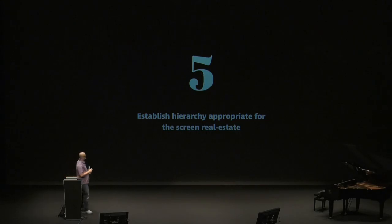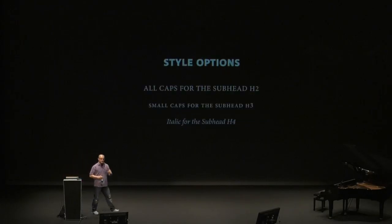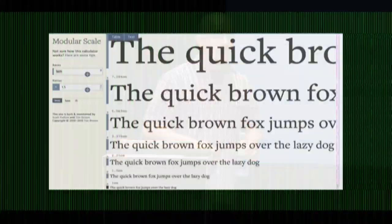Number three: establish hierarchy appropriate for the screen real estate. Instead of using different font sizes on smaller screens — which gives you really huge headlines — you can use all caps for H2, small caps for H3, or italics for H4, all at the same font size of 16 pixels, whatever the body copy size is. There's another tool, modular-scale.com — you can choose values based on a musical scale, so you see music meets design, then use those values in your design.